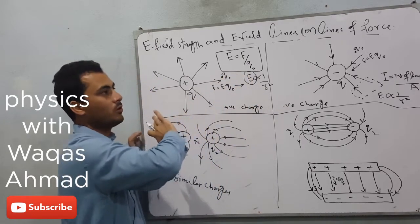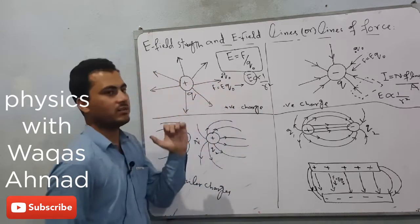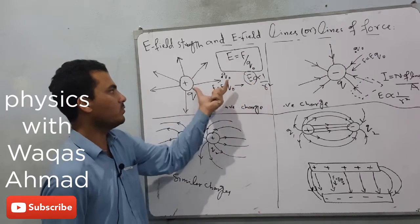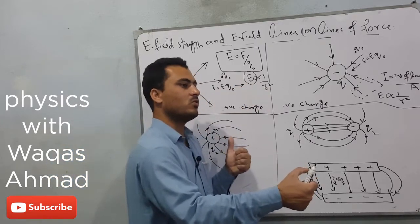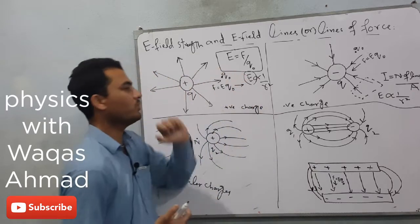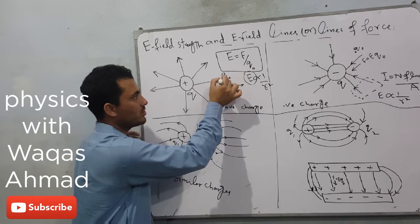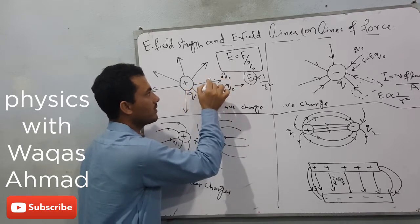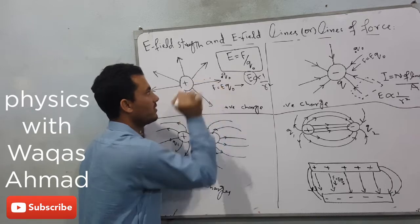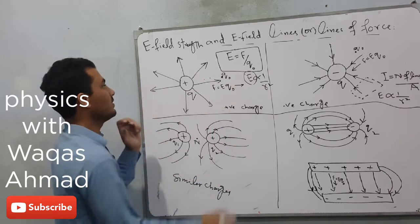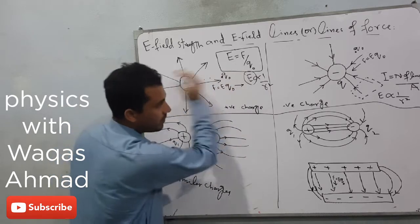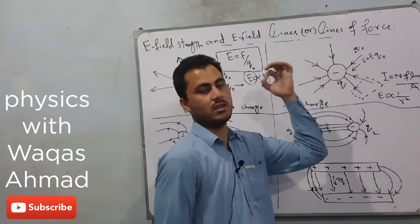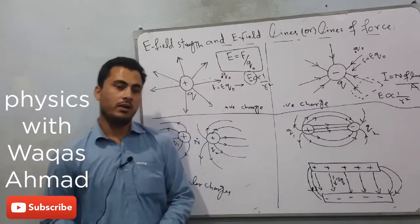Electric field strength depends upon the distance between the two charges. If you pull the test charge apart from the source charge, the electric field strength decreases. The electric field strength at a position farther away is weaker compared to a position closer to the source charge. So electric field strength increases towards a positive charge and decreases away from it. You can also define electric field strength at different points in the region around the charge.